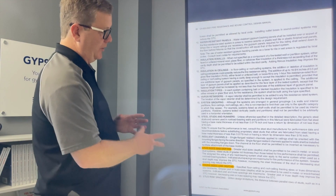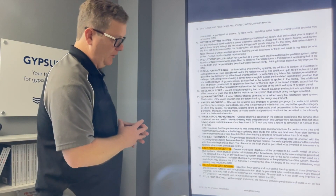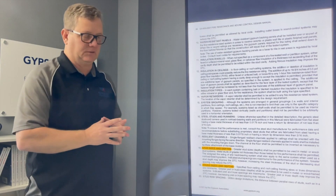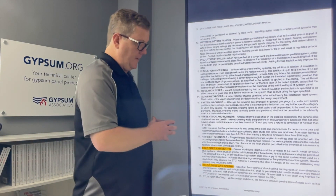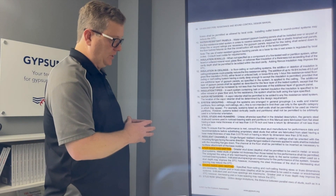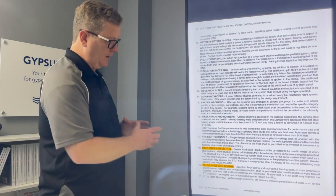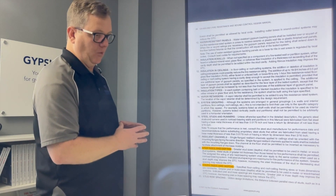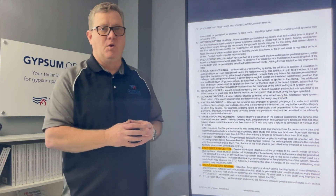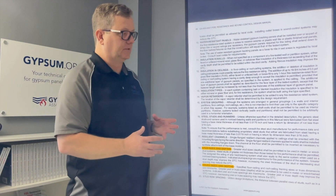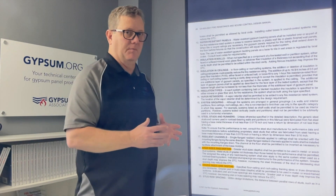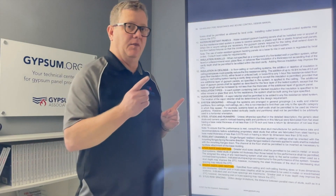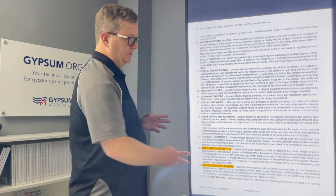I've got two other notes highlighted that we use to answer technical questions on a regular basis: note 18, stud sizes and depth, and note 19, truss sizes and depth. We'll get questions like 'can you use a larger stud within a fire rated system?' or 'can I use a larger truss in a fire rated system that's not noted within the GA file number description?' You'll find your answers right within those notes.